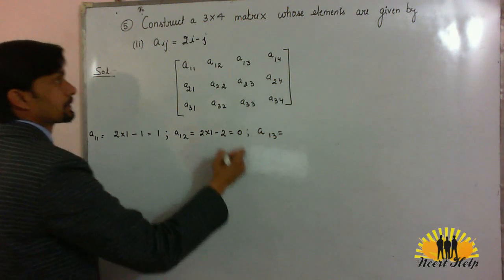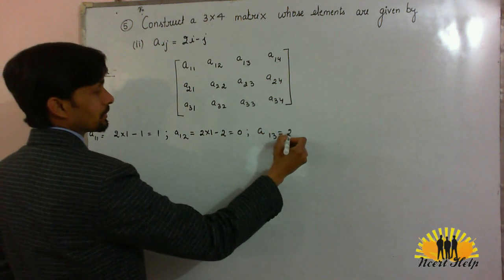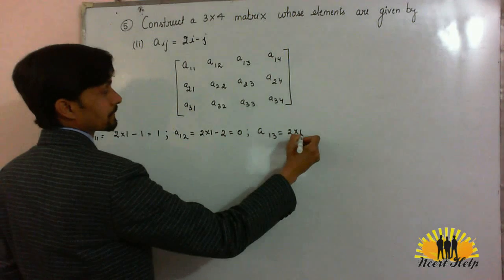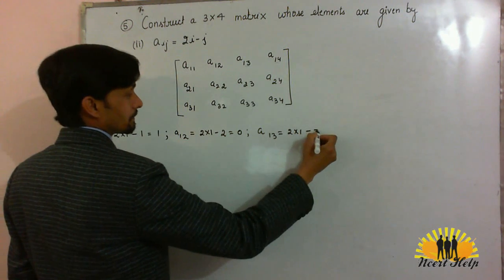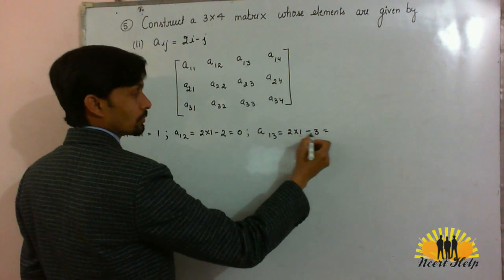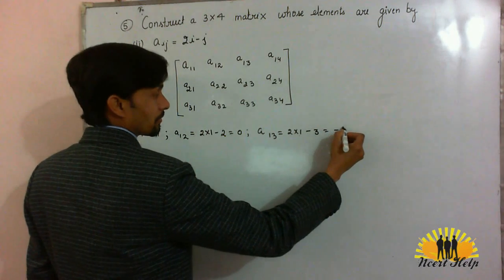A13, put in the formula: 2 into i minus j, 2 minus 3, minus 1.